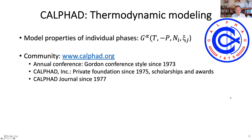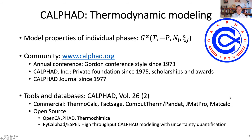CALPHAD is a community. It has an annual conference, a CALPHAD conference style since 1973. It has a CALPHAD Foundation since 1975, which supports scholarships and awards at the conference. And CALPHAD has a journal published since 1977. There are a number of tools and databases, some of them published in a special issue of CALPHAD, volume 26, issue 2.